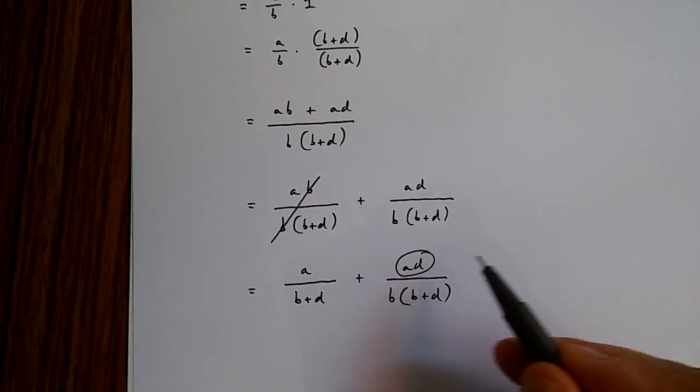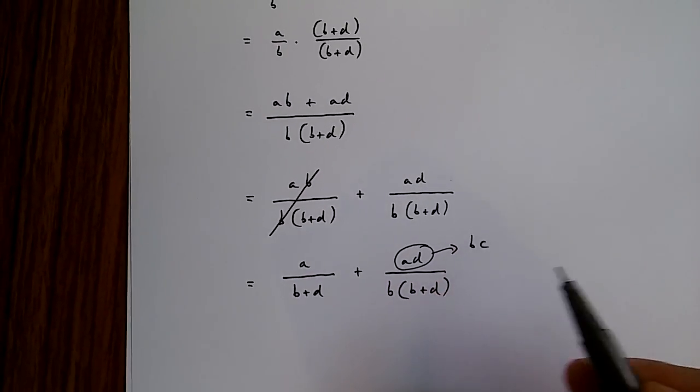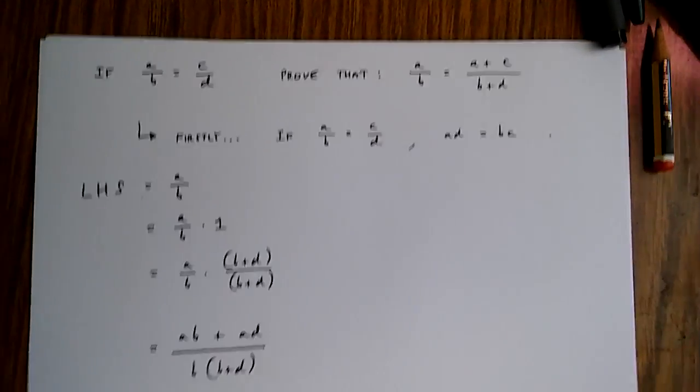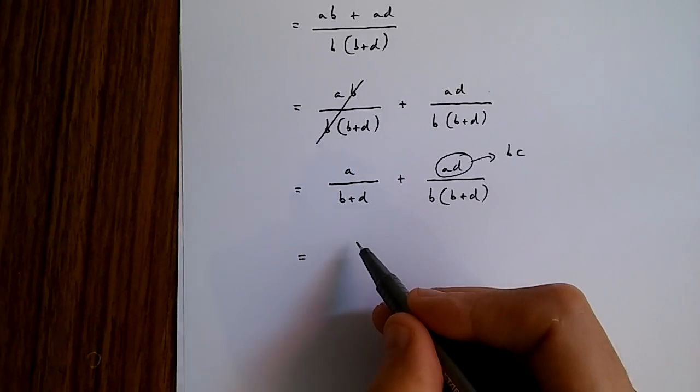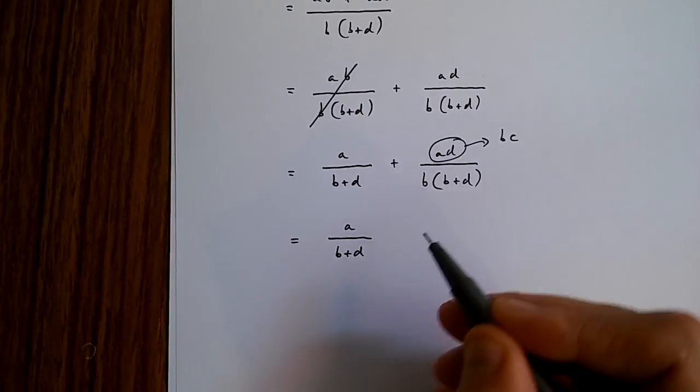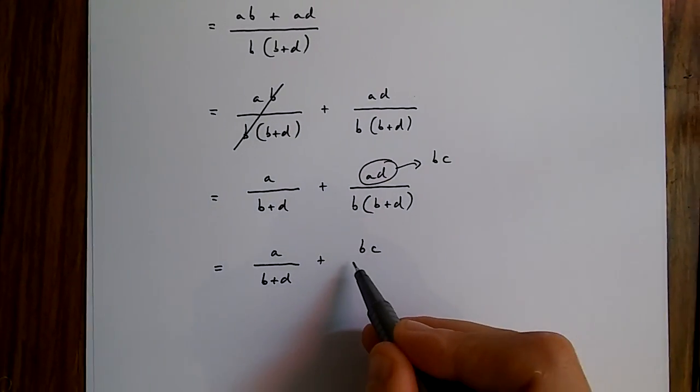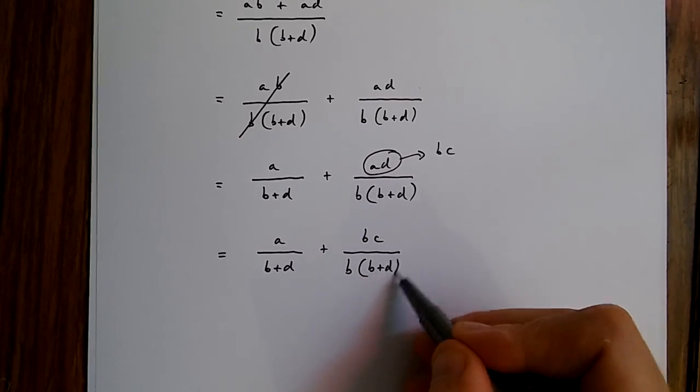Now, it turns out that ad is in fact equal to bc. We showed this earlier. So from here, we get a over b plus d plus bc over b times b plus d.